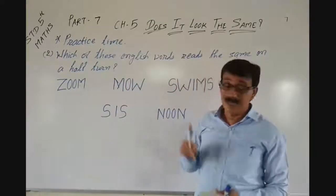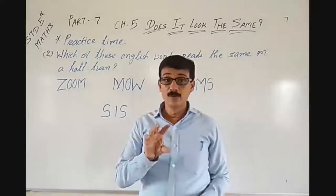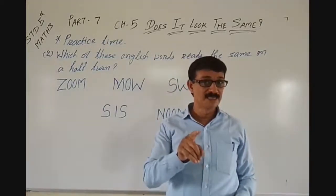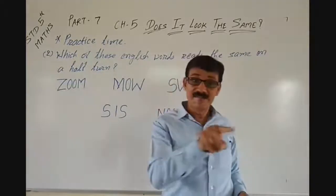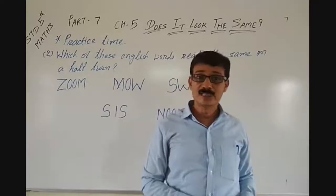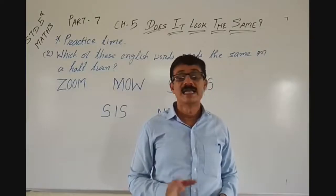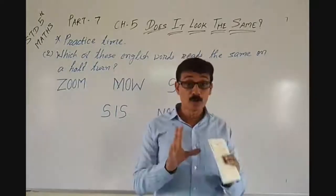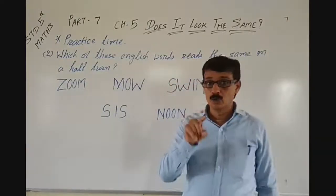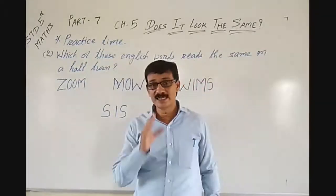How does it look the same? In the last part, we gave half turn to English alphabets. Can you say which were those alphabets that, on giving half turn, were looking the same as the original? Total 7 alphabets out of 26 were looking the same after giving the half turn. You must have performed that practice at your home.